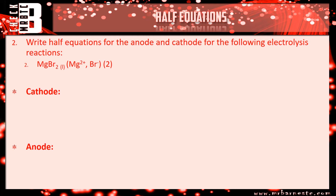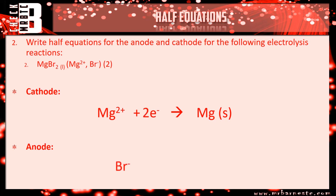MgBr₂ liquid — only Mg²⁺ and Br⁻ ions. Mg²⁺ goes back to Mg: it's in group two so needs two electrons added on the left: Mg²⁺ + 2e⁻ → Mg. Bromide ion Br⁻ goes back to the bromine molecule Br₂ — again a halogen, so diatomic. Take an electron away on the right, then balance: two bromine ions and therefore two electrons on the right: 2Br⁻ → Br₂ + 2e⁻.